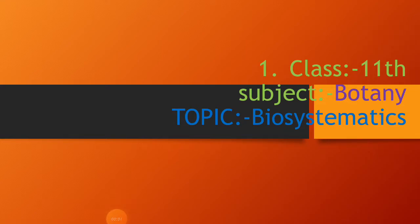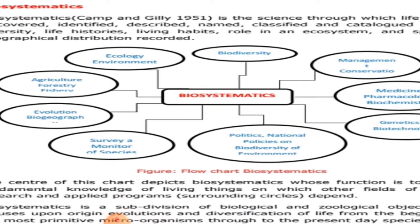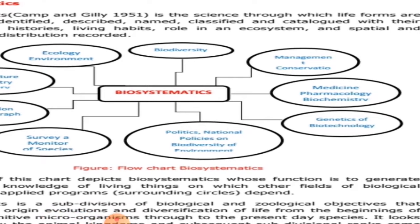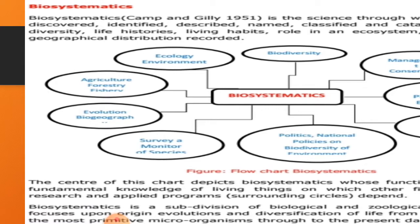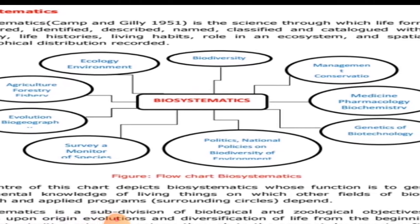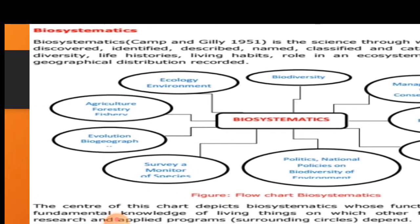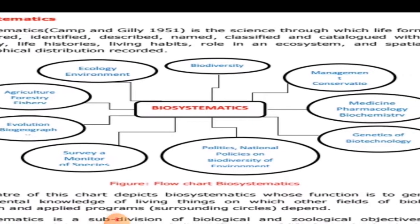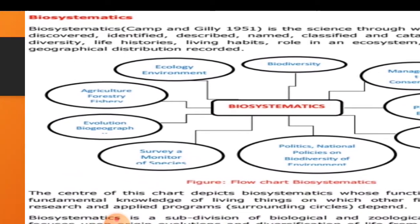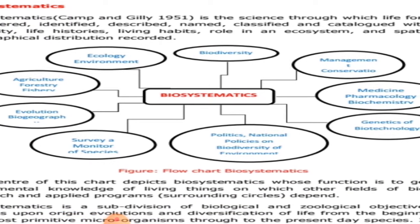Students of 11th class, our curious article of botany is biosystematics. Biosystematics is a science through which life forms are discovered, identified, described, named, classified, and cataloged. Their diversity, life histories, living habits, role in an ecosystem, and geographical distribution are recorded.